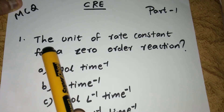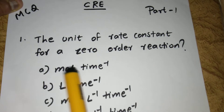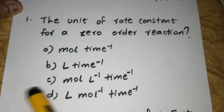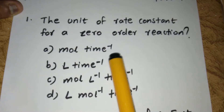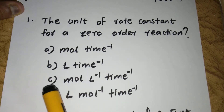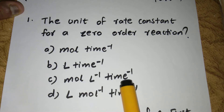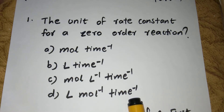First question: what is the unit of rate constants for a zero order reaction? Option A: mol·time⁻¹. Option B: liter·time⁻¹. Option C: mol·liter⁻¹·time⁻¹. Option D: liter·mol⁻¹·time⁻¹. What is the answer?